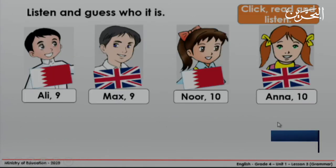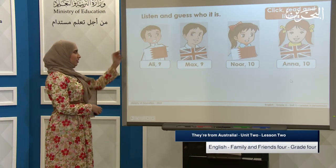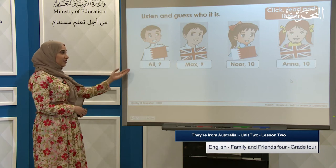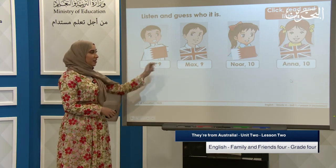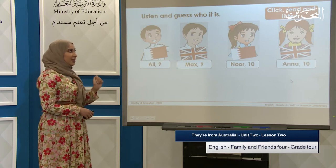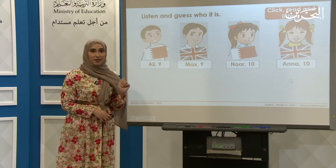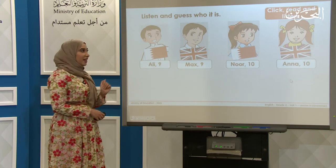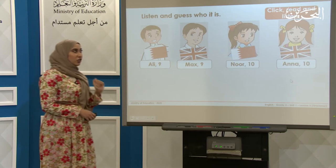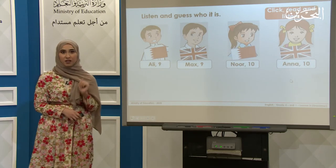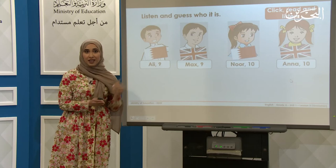Now I want you to listen and guess who's the correct person. First, we have Ali — he's from Bahrain and he's 9. Here we have Max — he's 9 and he's from the UK. Next, we have Noor — she's 10 and she's from Bahrain. And we have Anna — she's 10 and she's from the UK. Now get your mini board ready and write with me.